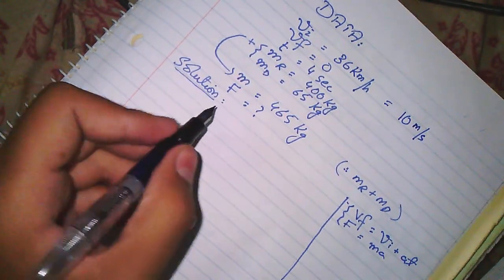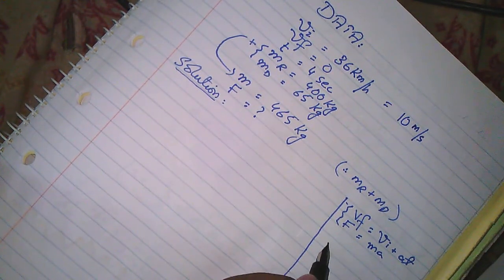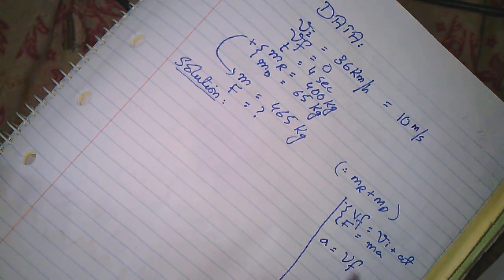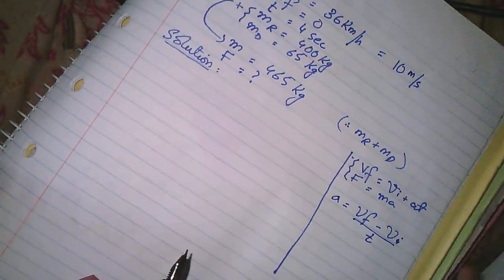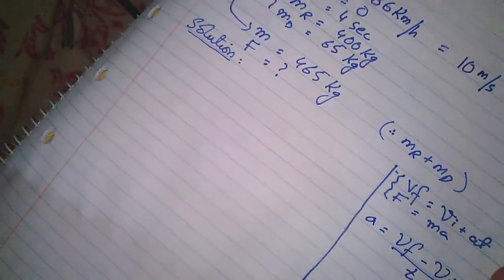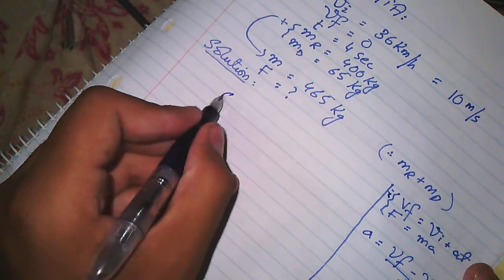So what we have to do? Acceleration formula is A equals VF minus VI divided by T. This is the acceleration formula.